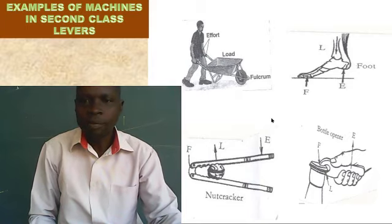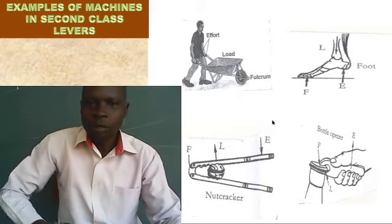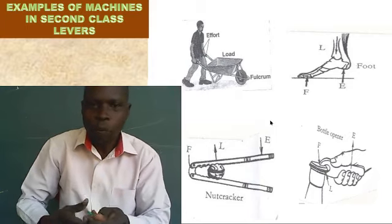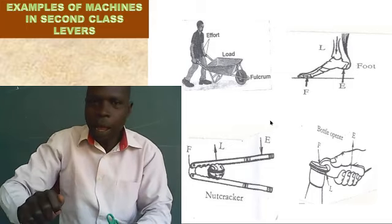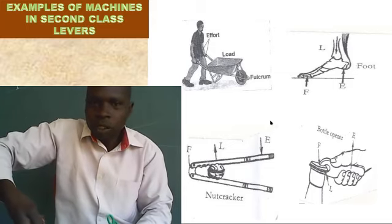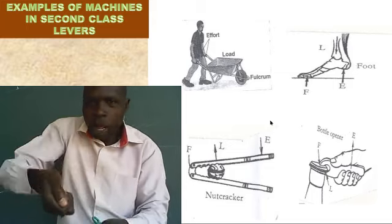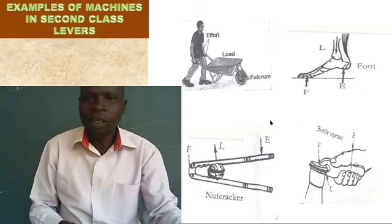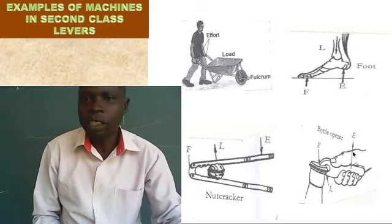Now look at this — the bottle opener. When you're opening a bottle top, it goes up. You pull up using this type of bottle opener. You pull it up. That's why you see this going up.